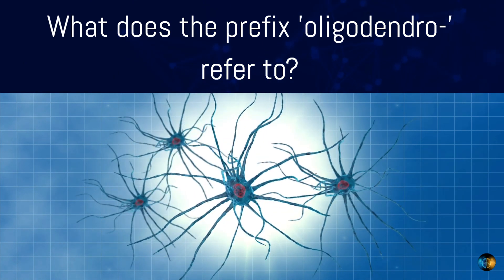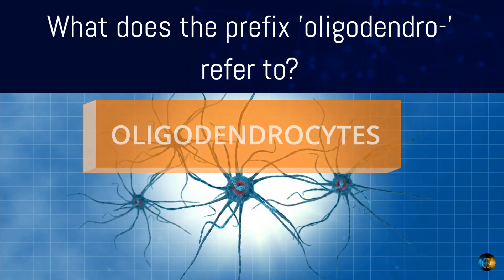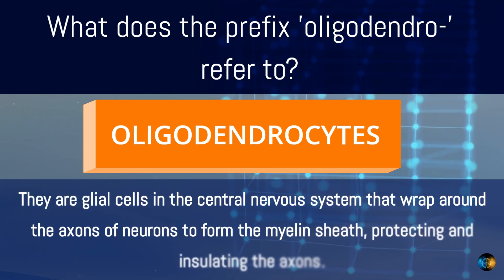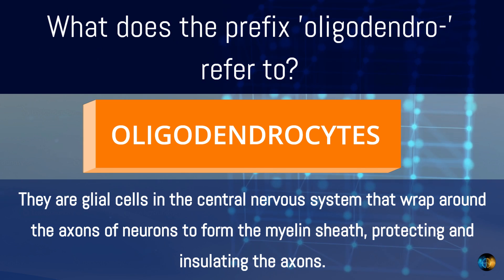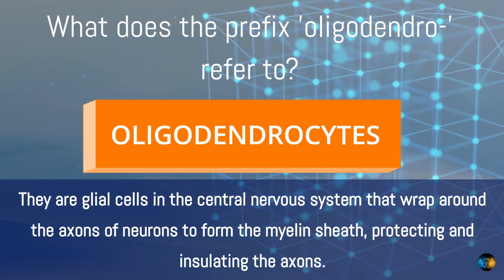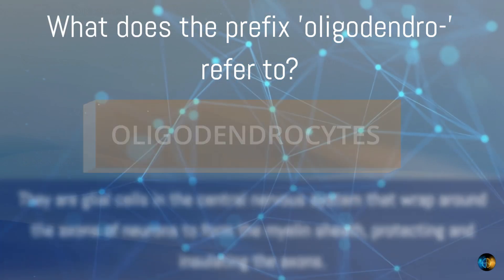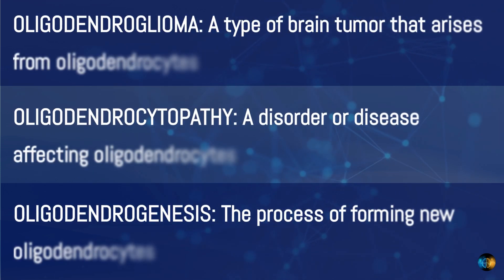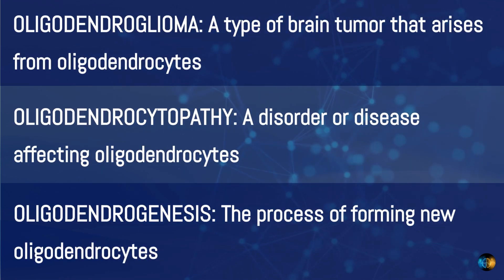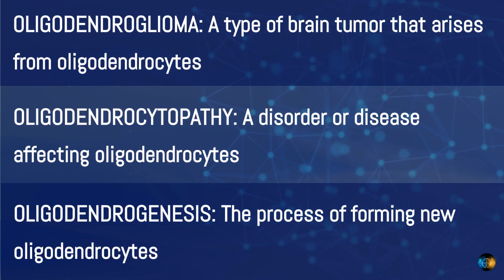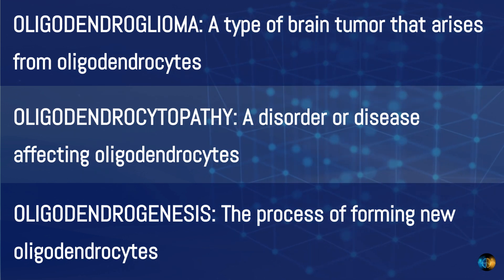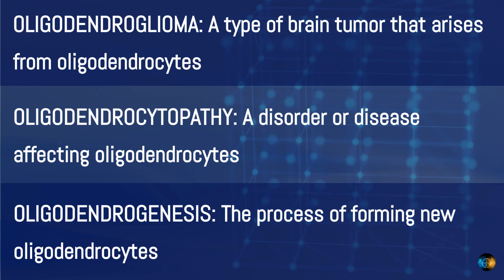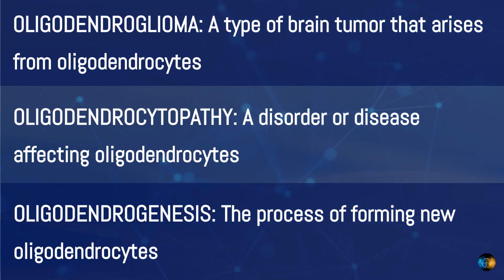What does the prefix 'oligodendro' refer to? Oligodendrocytes — glial cells in the central nervous system that wrap around the axons of neurons to form the myelin sheath, protecting and insulating the axons. Related terms include oligodendroglioma, a type of brain tumor that arises from oligodendrocytes; oligodendrocytopathy, a disorder affecting oligodendrocytes; and oligodendrogenesis, the process of forming new oligodendrocytes.